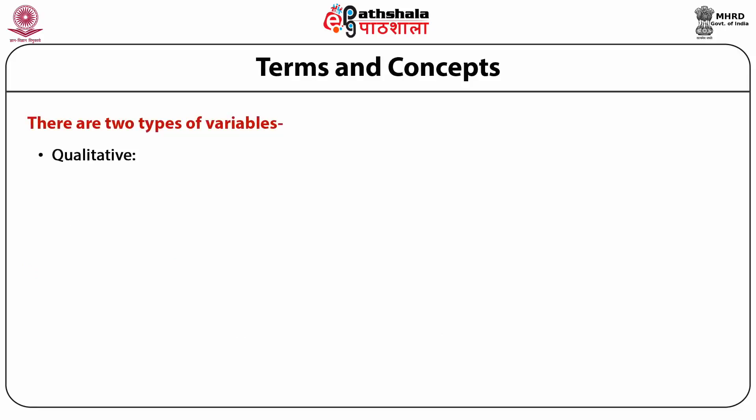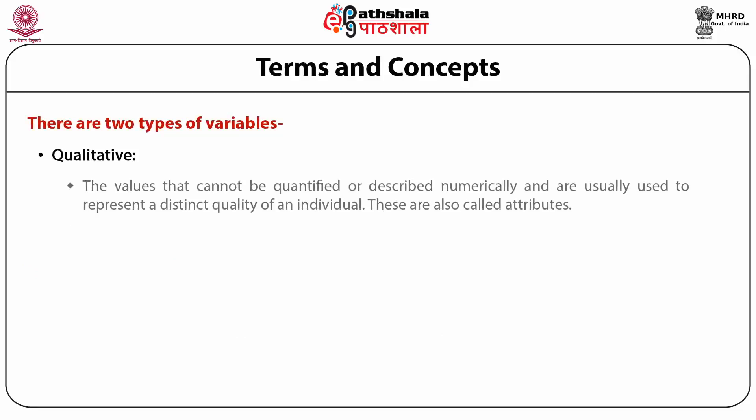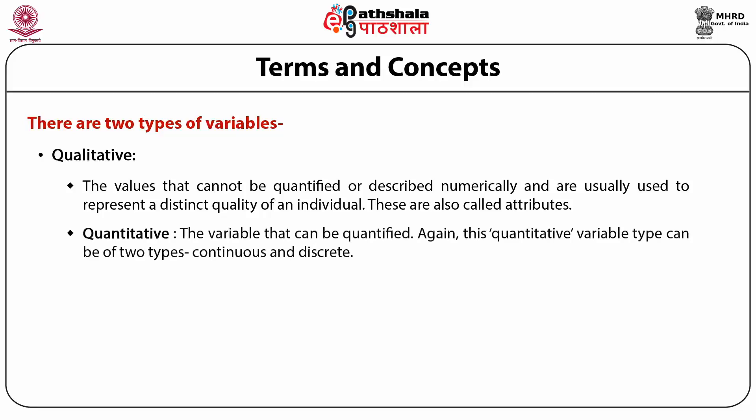There are two types of variables: qualitative variables and quantitative variables. Values that cannot be quantified or described numerically and are usually used to represent a distinct quality of an individual are called attributes or qualitative variables. For example, the sex of an individual can be either male or female. Nutritional status can be classified as malnourished, normal, overweight, or obese. Presence or absence of any genetic character — these are all qualitative variables. Quantitative variables can be quantified, and they can be of two types: continuous or discrete.